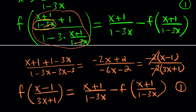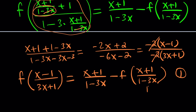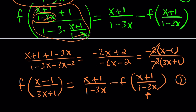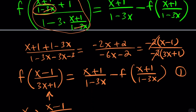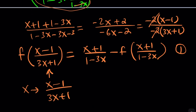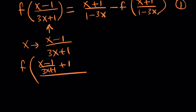To get the second equation, we make another replacement in the original problem. We got the x minus 1 version, so we can replace x with x minus 1 divided by 3x plus 1. Replacing x with x minus 1 over 3x plus 1 in the original equation, we get: f of x minus 1 over 3x plus 1, plus 1, divided by 1 minus 3 times x minus 1 over 3x plus 1.